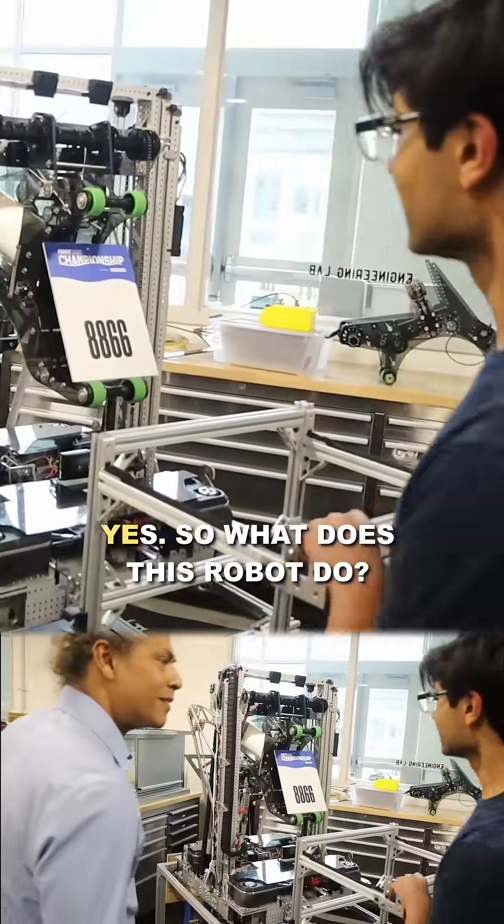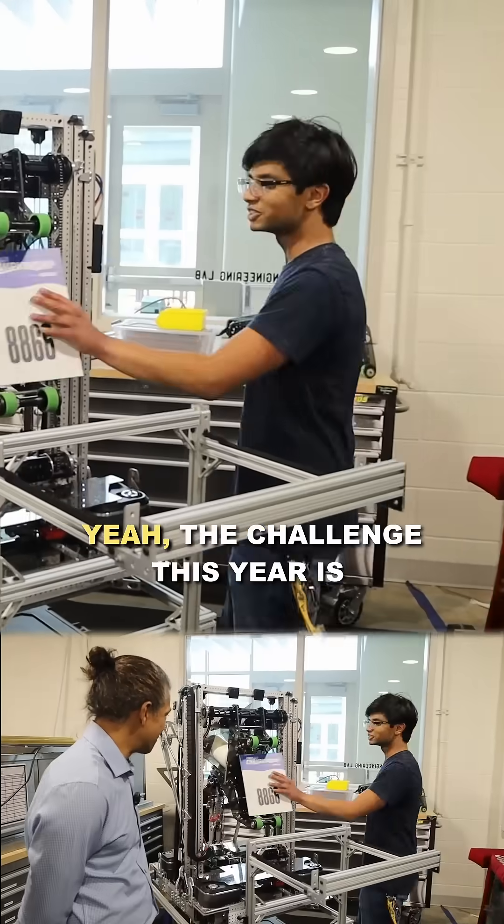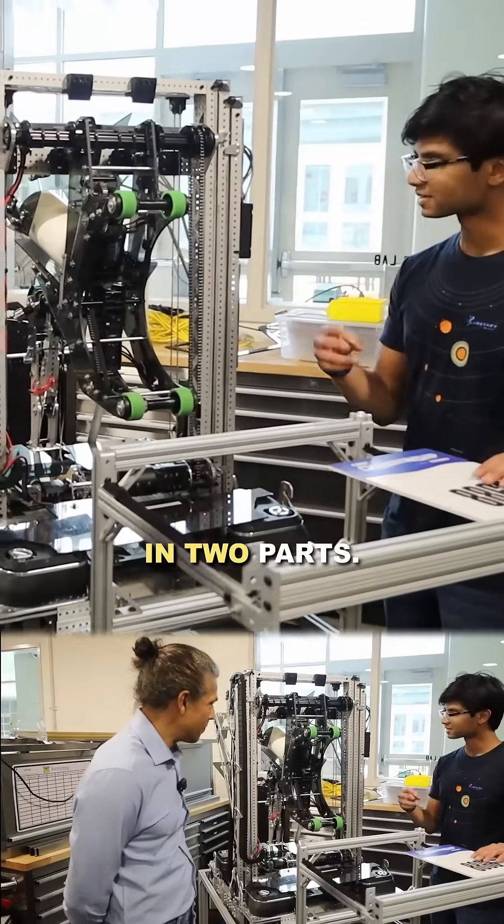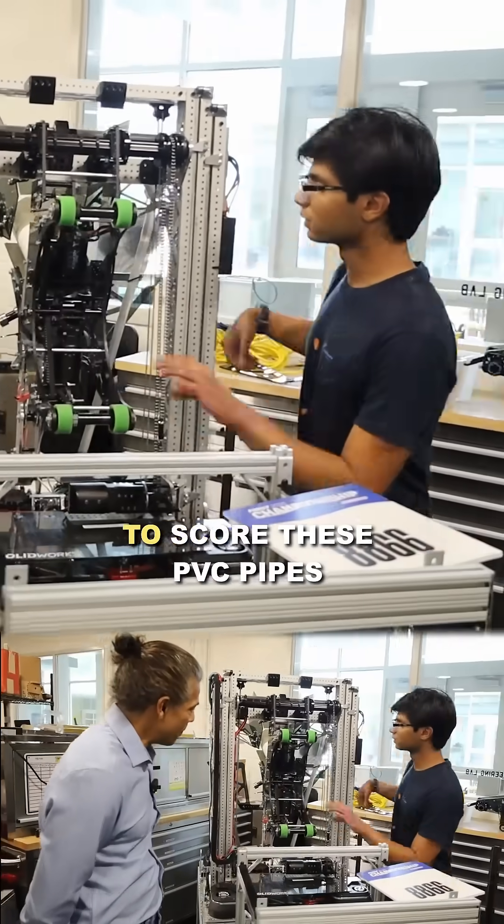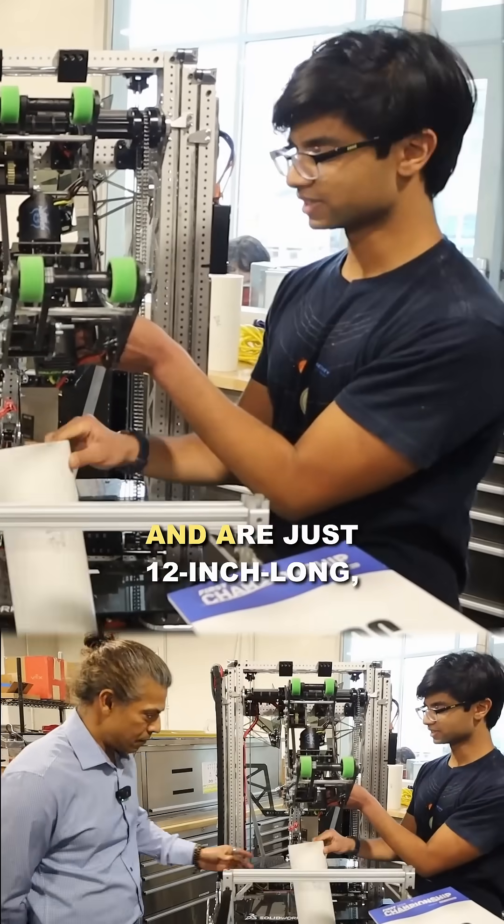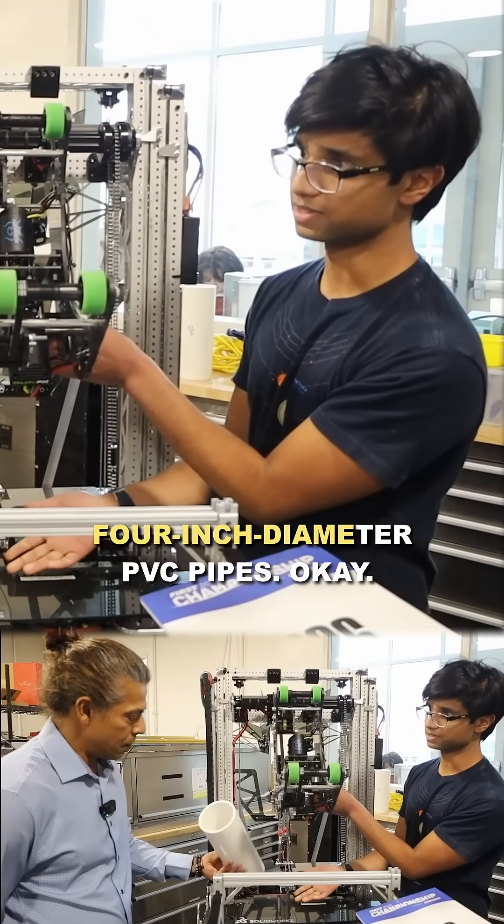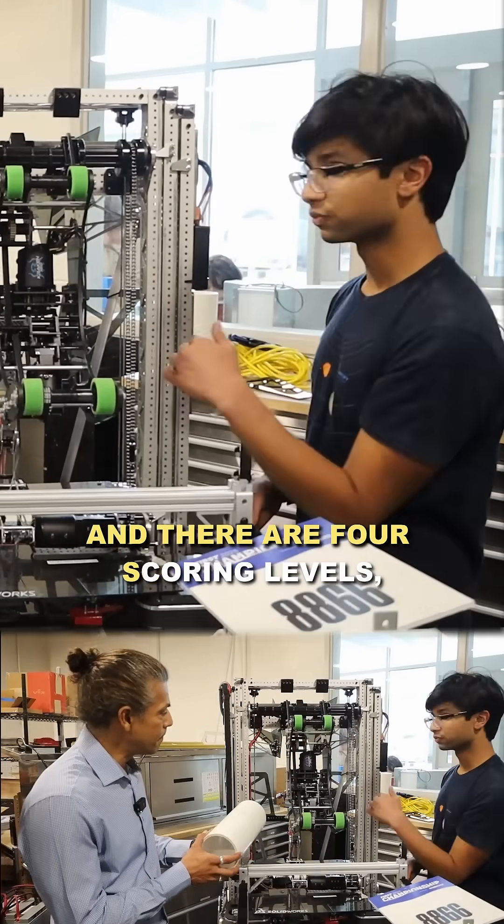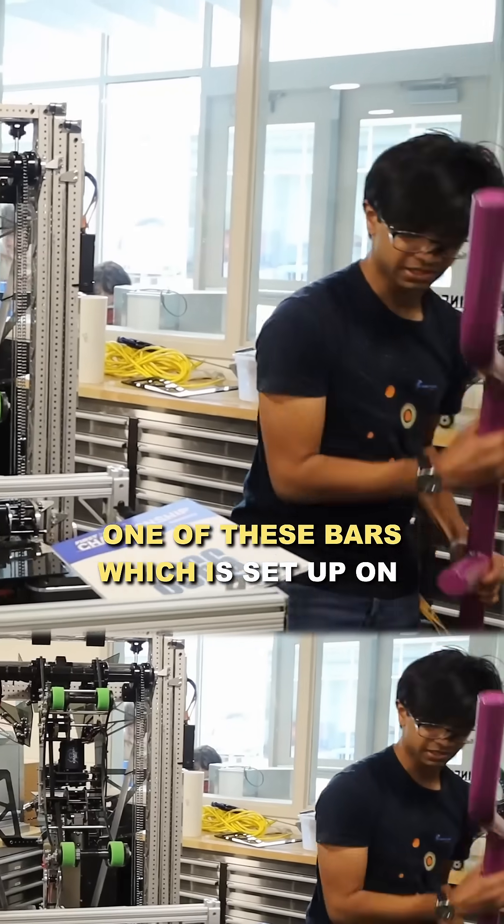This is a championship robot. The challenge this year has two parts. The first one is to score these PVC pipes that we call coral—they're just 12-inch long, 4-inch diameter PVC pipes.